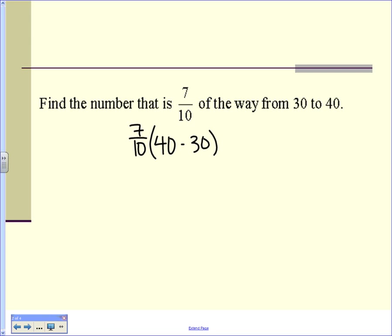Okay, we said the difference was 10 there. 7 tenths of 10 is... but how did you get the 37? That's 30. What's your formula for those? Oh, because we started at 30.